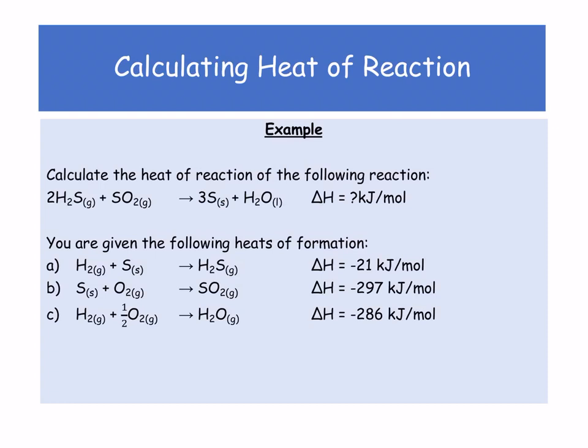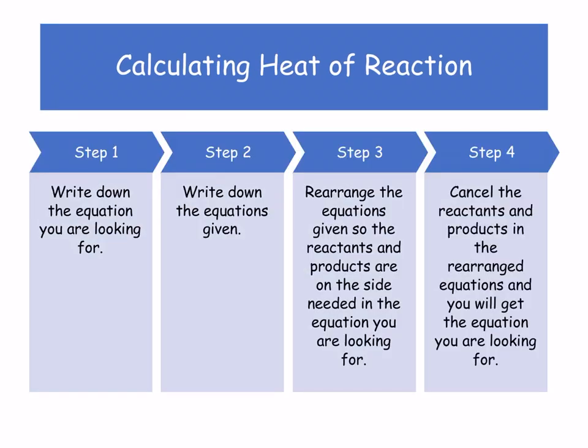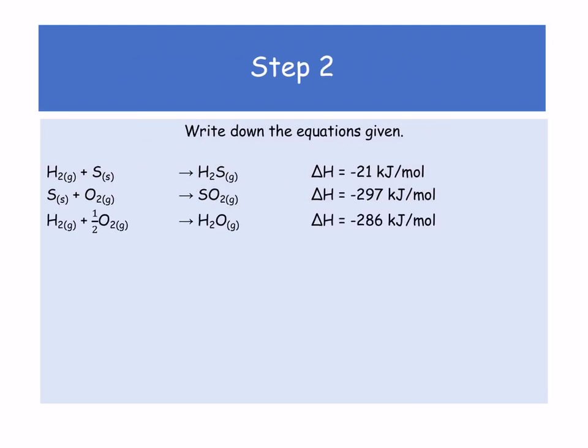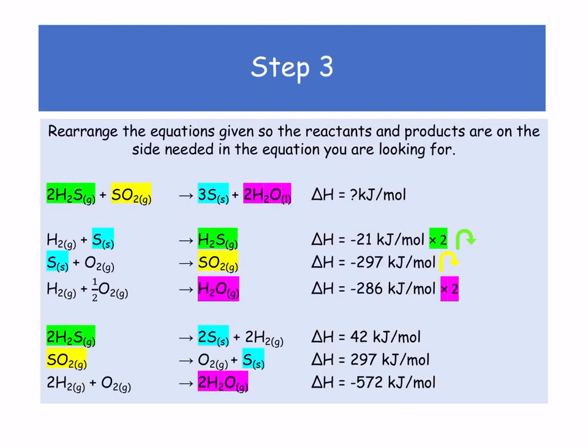Take a minute — just check if there's anything you think you need to flip. Write down the equation that you're looking for. Write down the equations given. Rearrange. Cancel reactants and products until you get what you want. I know for a fact that equation number 1 has got to be flipped. In step 3, rearranging: equation 1 has the sulfur on the wrong side, and equation 2 also has the sulfur on the wrong side. So we've got to change those over.